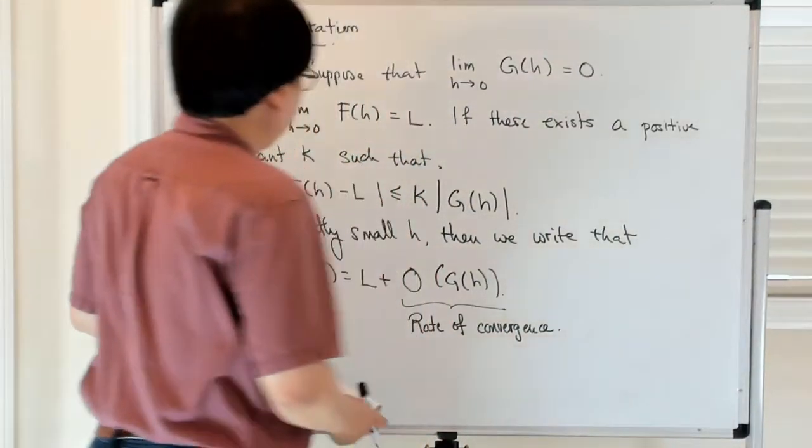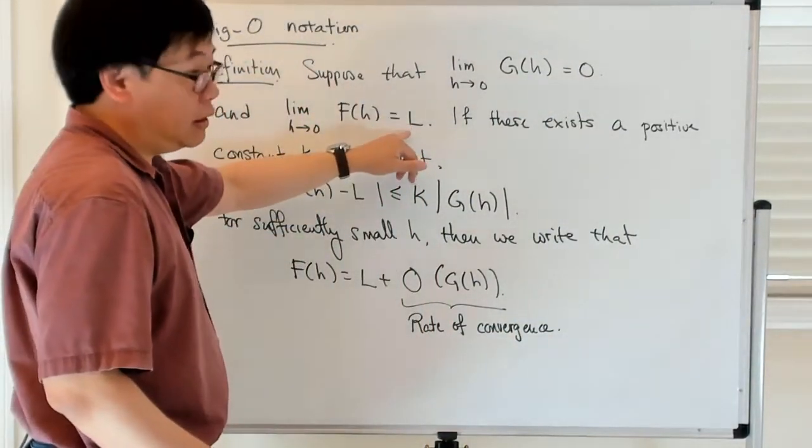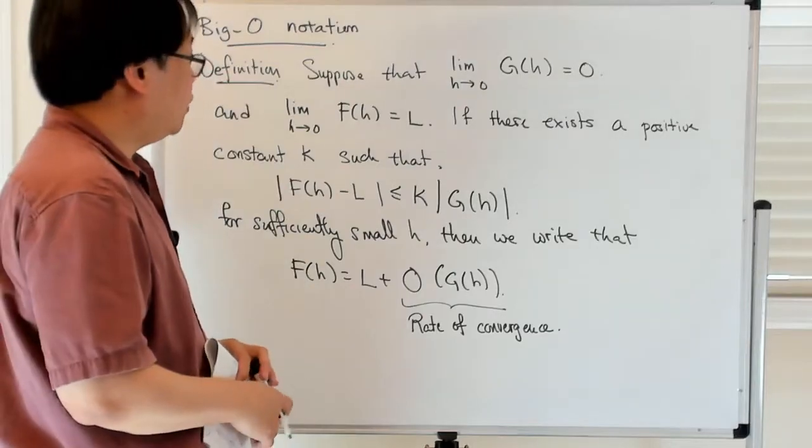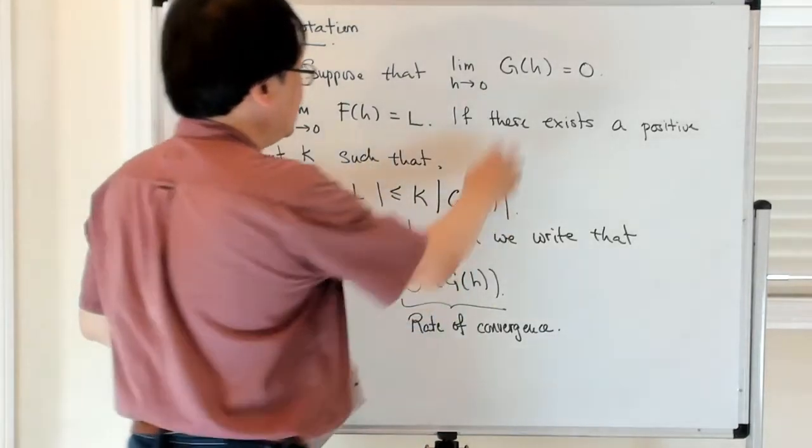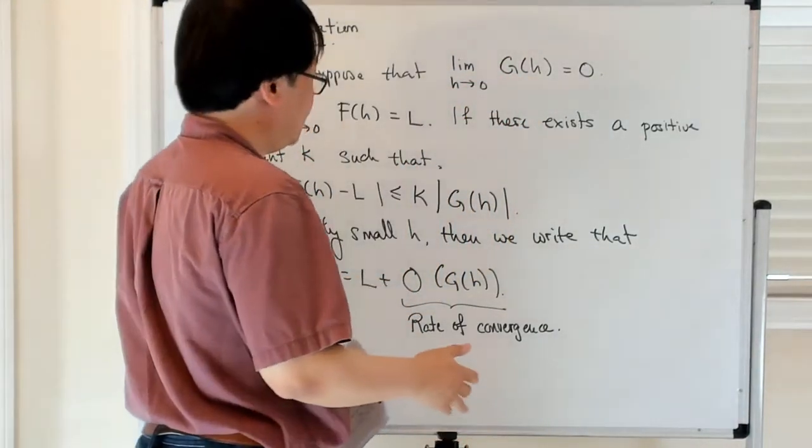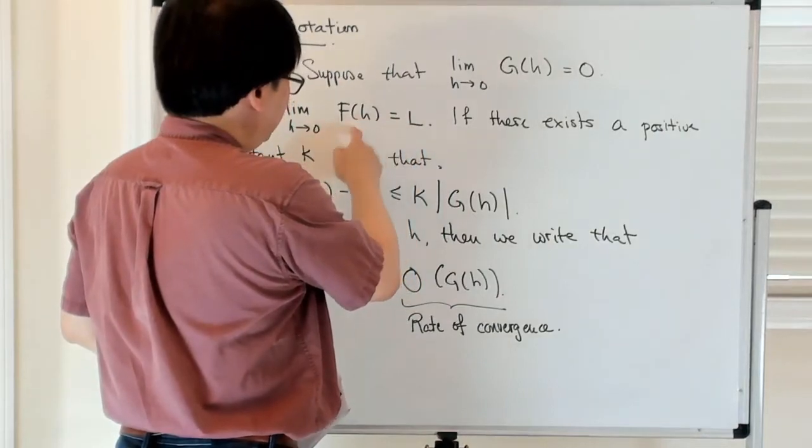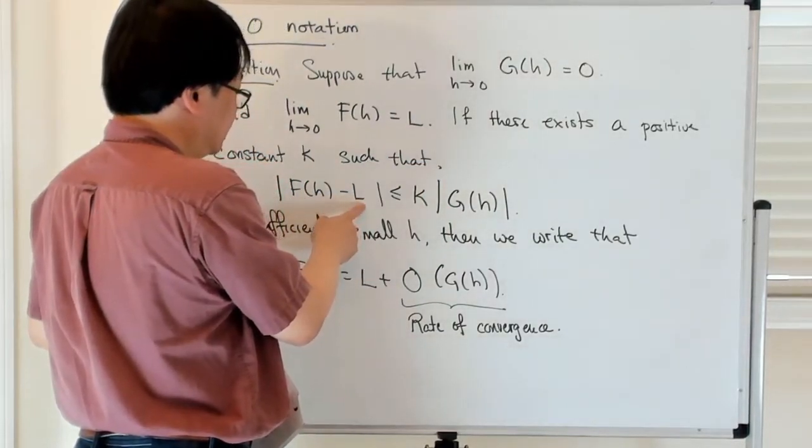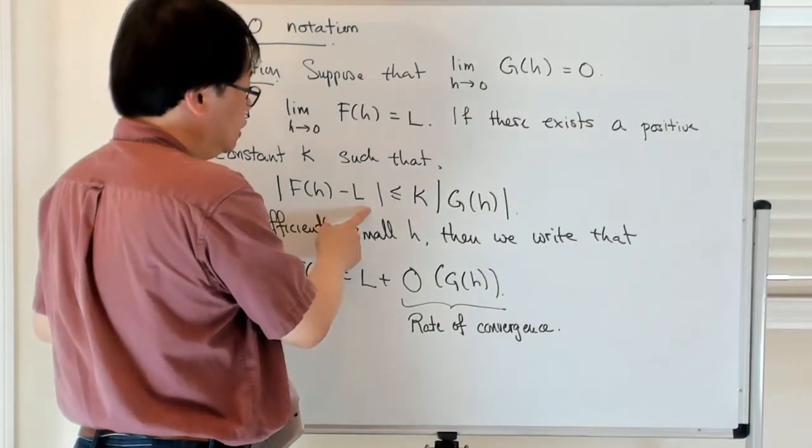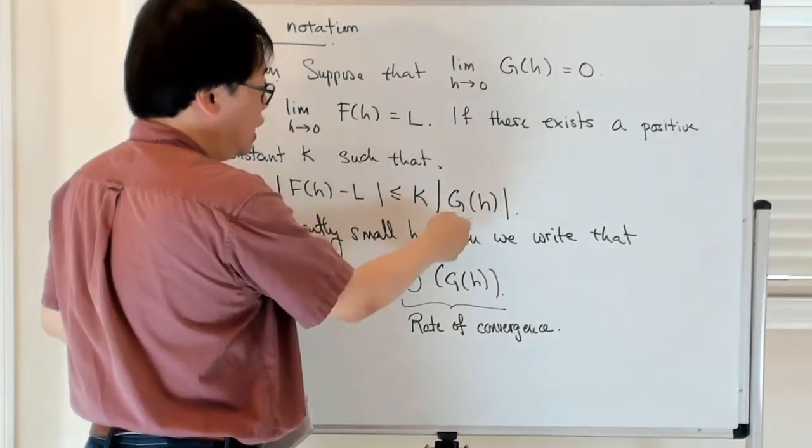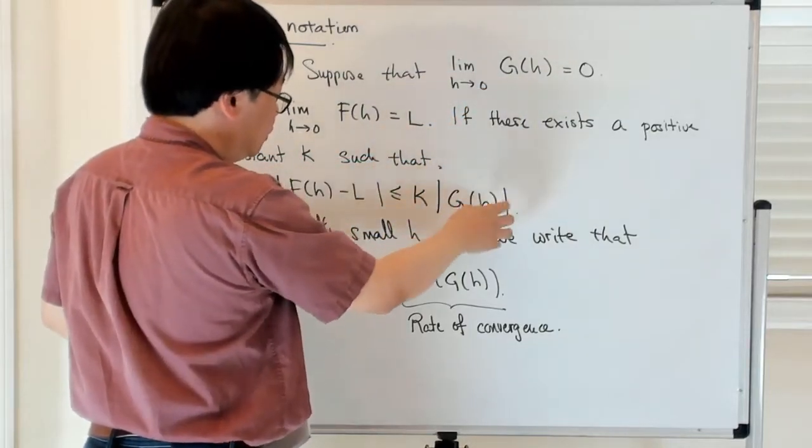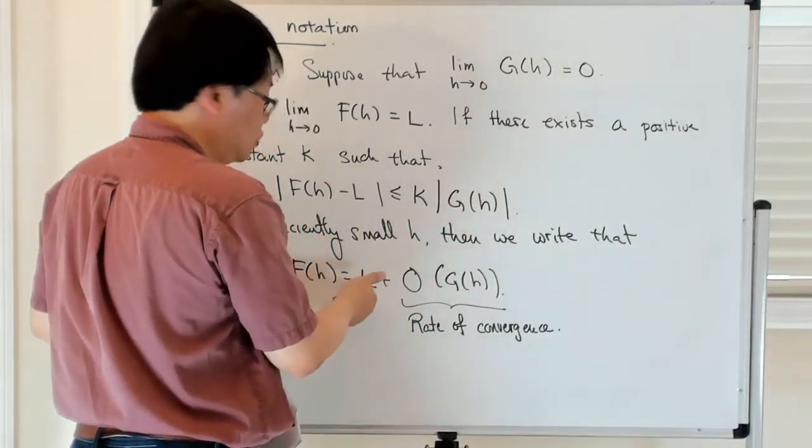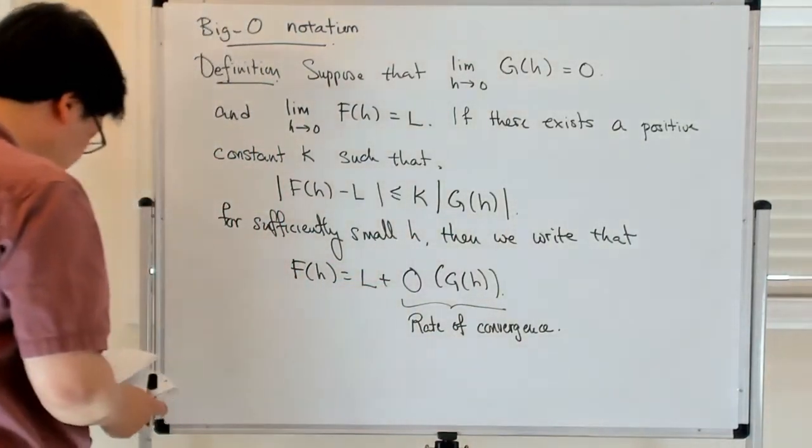So the idea is that you have some f of h which limits to l as h goes to 0, but you want to get some sense as to how fast it's converging to l. And what this does is to say that you have this g of h which is going to 0. So you know that the limit of f of h is l, and so you can ask whether or not you can compare the rate at which f of h approximates l or f of h limits to l, is bounded by some multiple of the decay rate of this other function g of h. And if you can, then this g of h is a way of characterizing the rate of convergence at the rate at which this f of h goes to l. So this is what is called a big O notation.